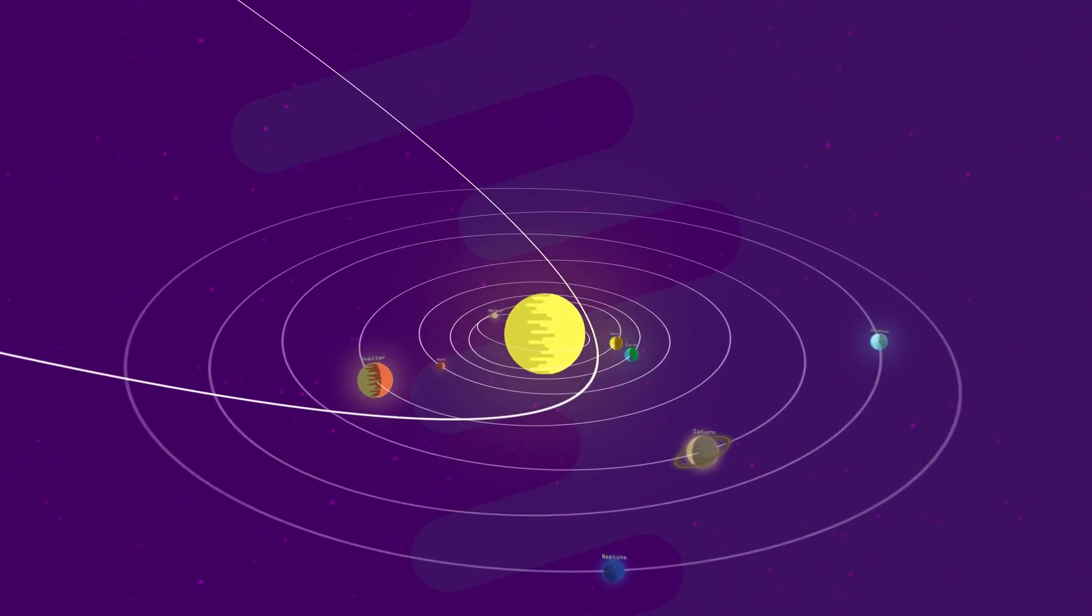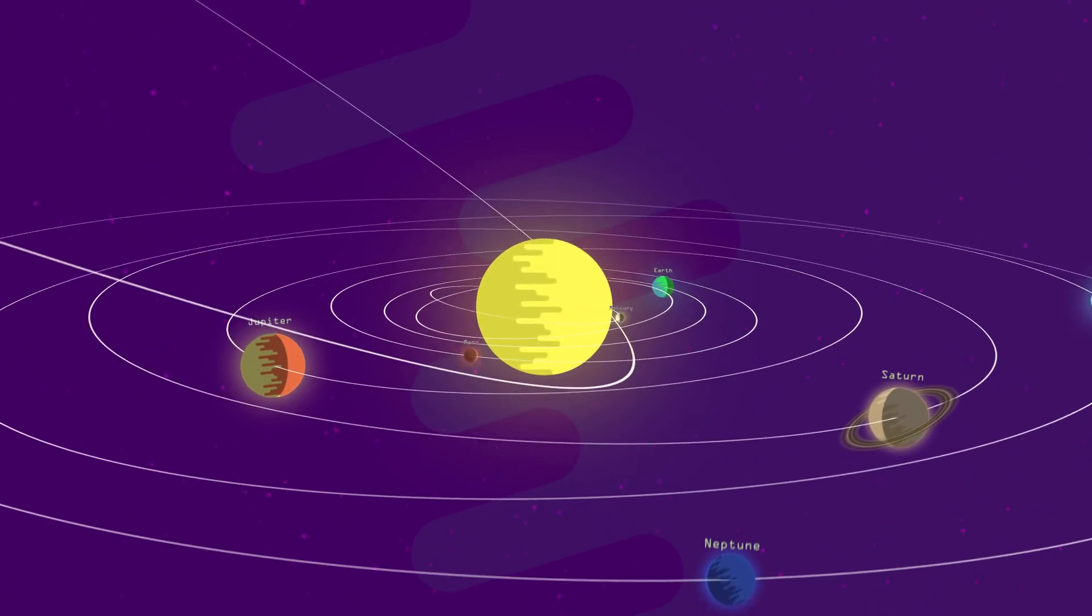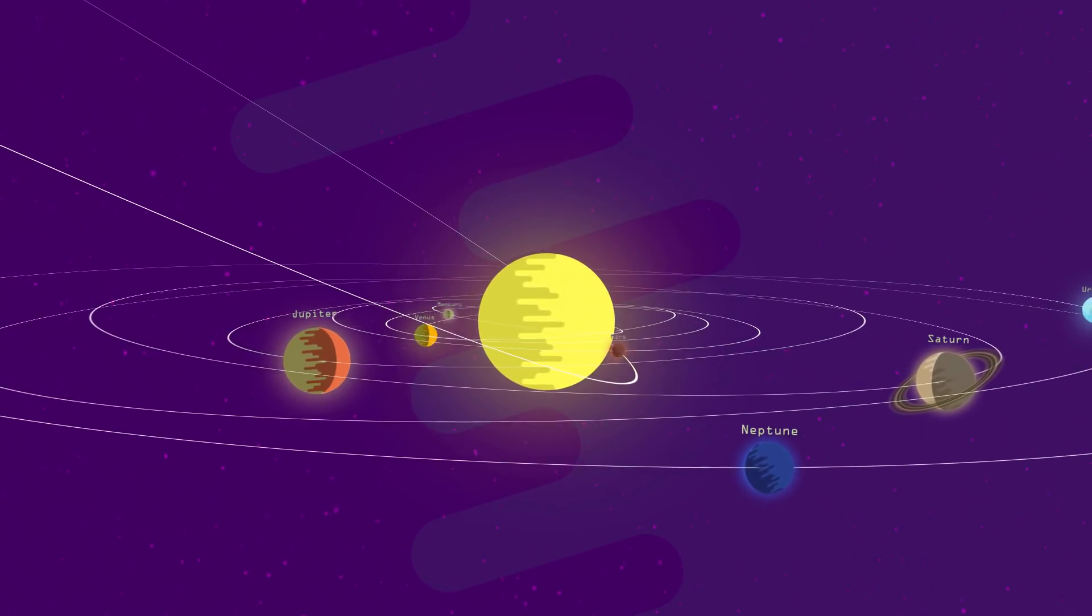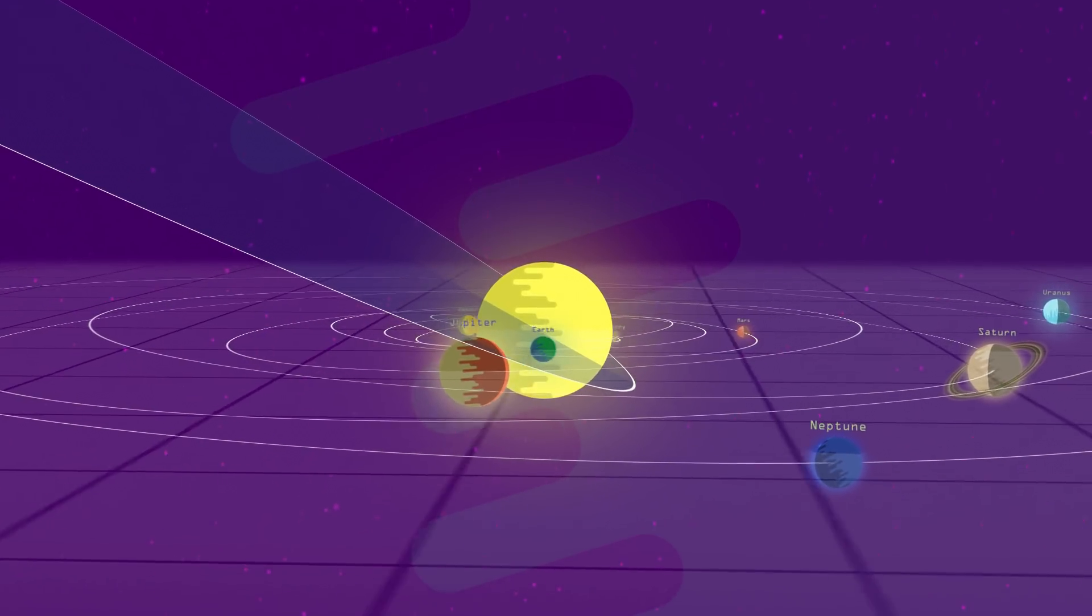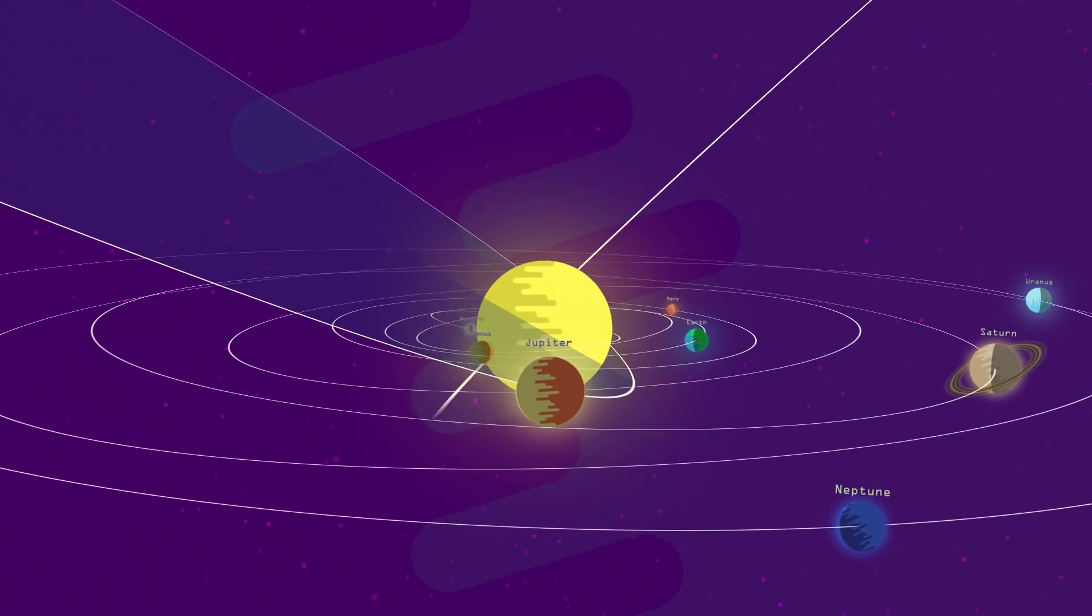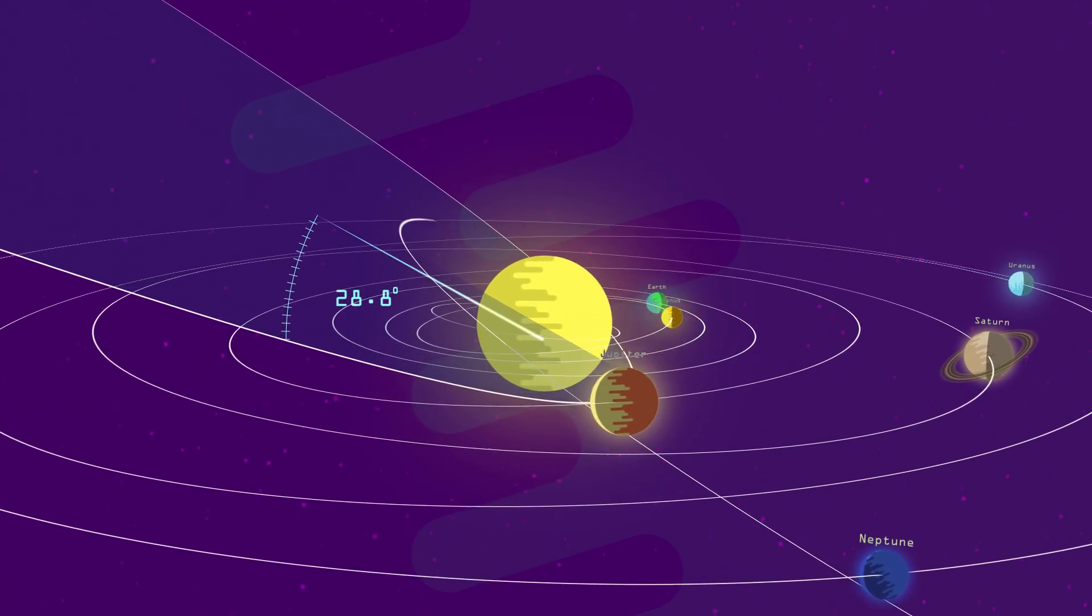Because comets that do make it into our solar system come from so far away, they orbit our sun differently than any other body in the solar system. Rather than staying on the same orbital plane as most of the planets and everything else, comets orbit in tight ellipses tilted at amazing variations from the orbital plane.